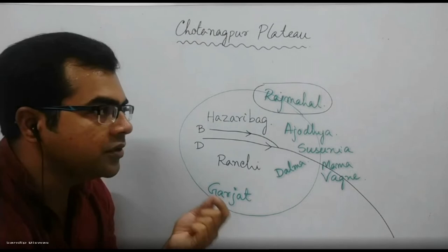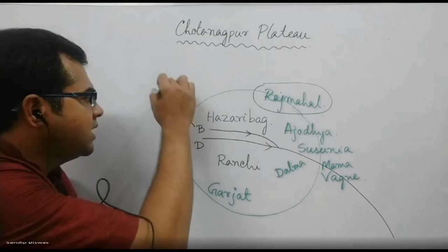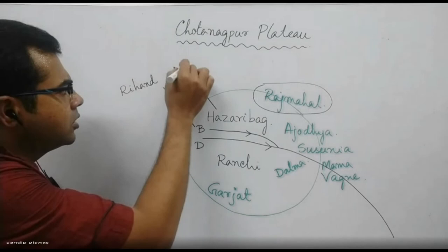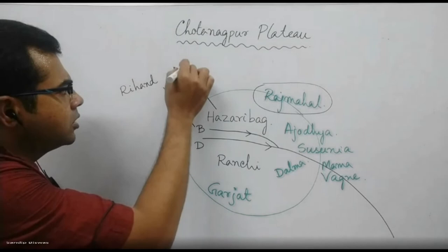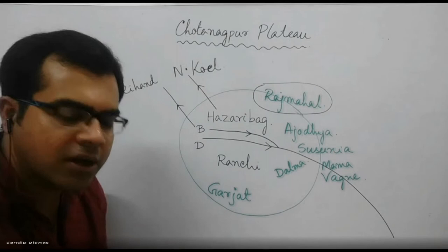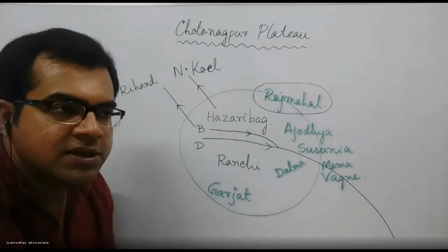The Netarhat is called Queen of the Chotanakpur Plateau. We have to get this river — this river is the Rihand River, and this is the North Koel River. The Rihand River is important. The Rihand River is called India's largest water reservoir. This is a multi-purpose project — the Rihand Dam, called Govind Ballabh Pant Sagar.